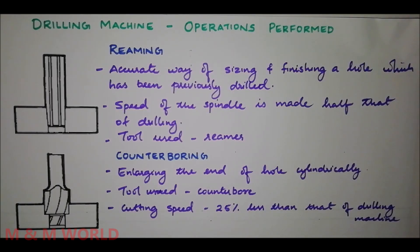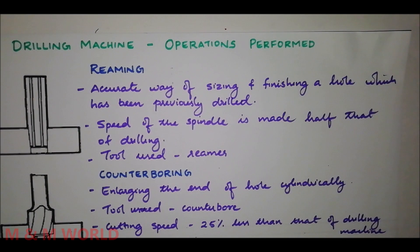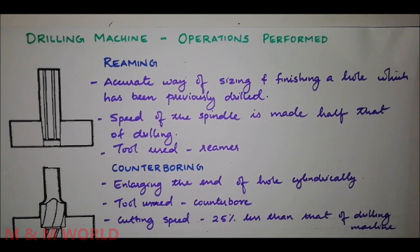The next one is reaming. Reaming is an accurate way of sizing and finishing a hole which has been previously drilled. It is a finishing operation and does not cut significant material. In order to finish a hole and bring it to accurate size, the hole is drilled slightly undersized and the speed of the spindle is made half that of drilling. The tool used is called the reamer.